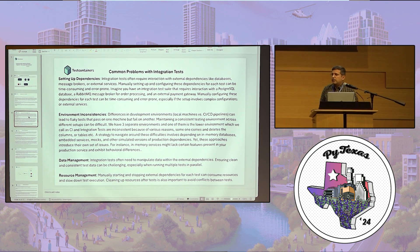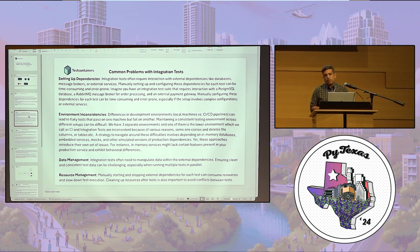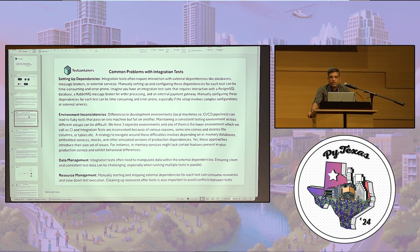The common problem when writing integration test cases with this architecture is setting up the dependencies — it's difficult to spin up the entire infrastructure locally. The alternative is to point our application to real infrastructure, but the problem I've faced is that our CI environment was shared by almost every team in the company. Test cases were fragile; someone could delete a table or brokers would go down, so our CI/CD pipelines failed most of the time.